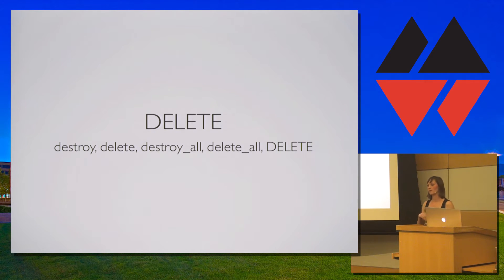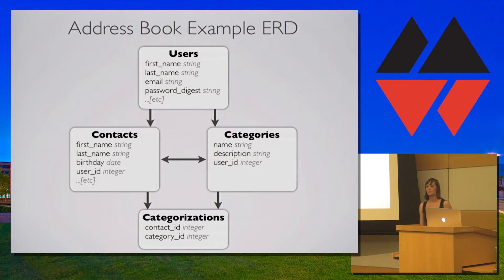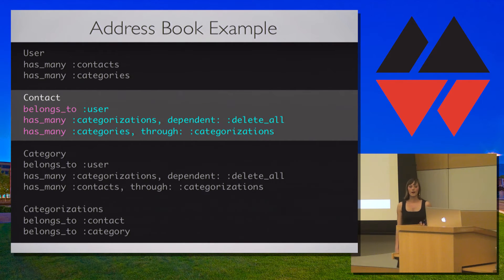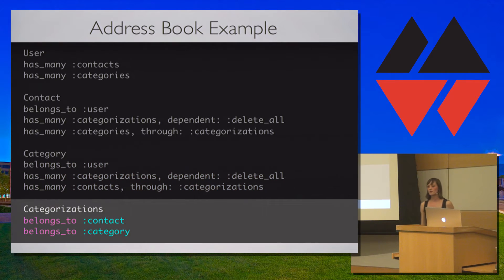For my examples, let's imagine we have an application that is an address book. Here's an ERD showing each of the models and their associations. Each user has many contacts and has many categories. Contacts belong to a user and have many categories through categorizations. Categories belong to a user and have many contacts through categorizations — making contacts and categories a many-to-many association connected through the categorizations join table.